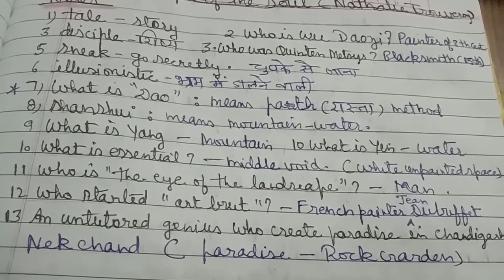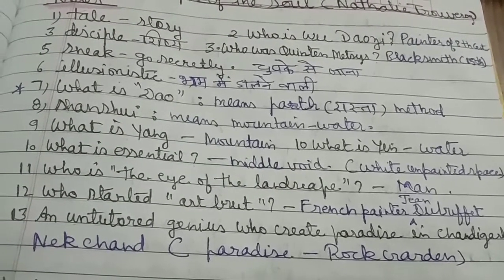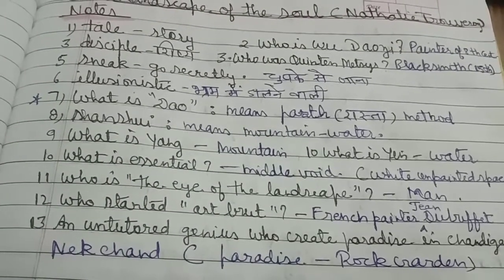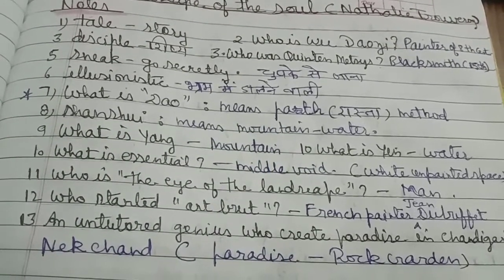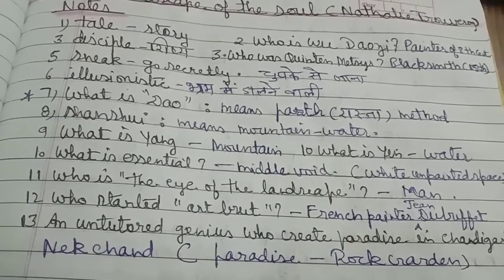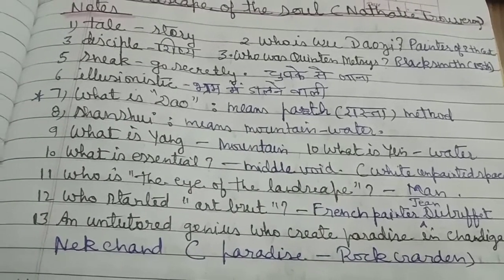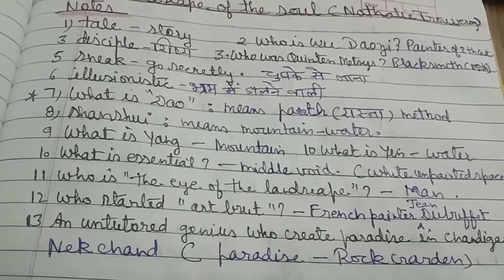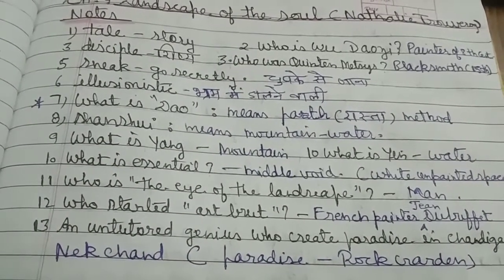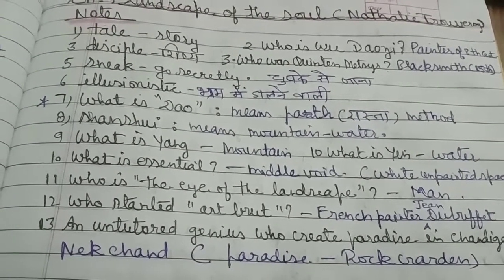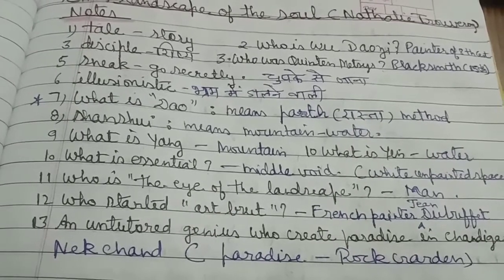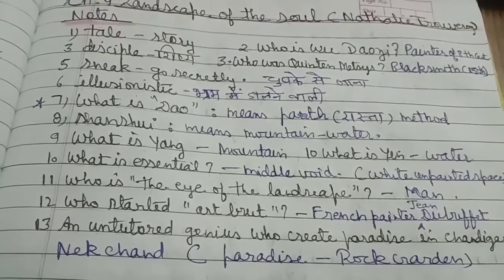What is the middle void? In Chinese painting, the white base at the back is called middle void. The middle void is essential because that is where the interaction of mountain (yang) and water (yin) happens. Who is the eye of the landscape? Human being, or man.